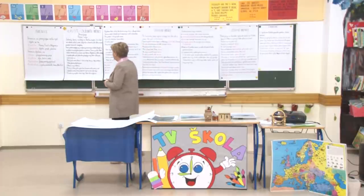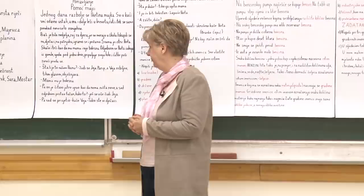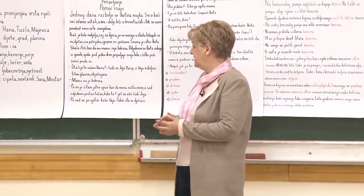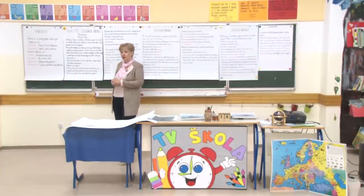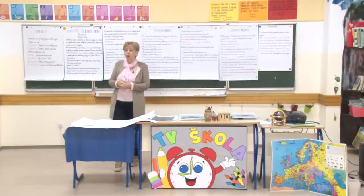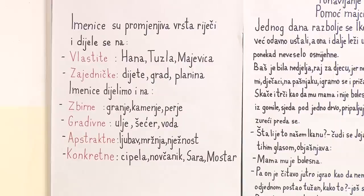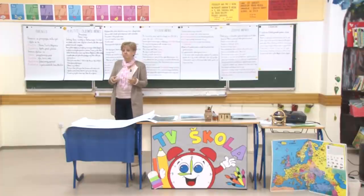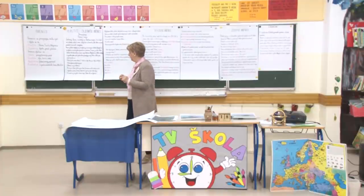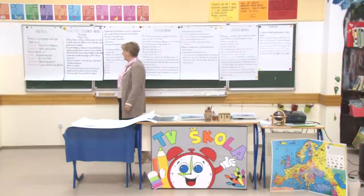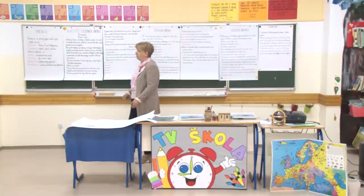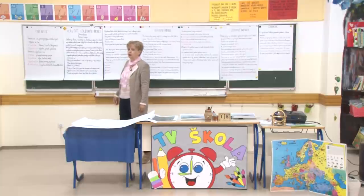Imenice su promjenjiva vrsta riječi i dijele se na vlastite - pa u vlastite imenice spadaju Hana, Tuzla, Majevica. Ima jedna Hana koja ide u područnu školu Dobrnja. Ovdje imamo dvije vlastite imenice: Hana i Dobrnja - Hana kao ime osobe, lica, i Dobrnja kao naziv naseljenog mjesta. Zajedničke imenice: dijete, grad, planina. Da smo u razredu, vi bi imali puno više primjera.